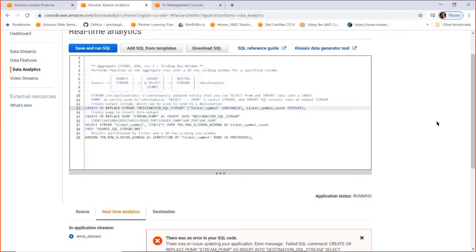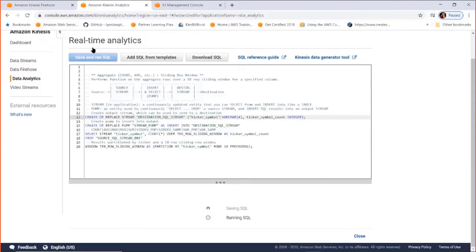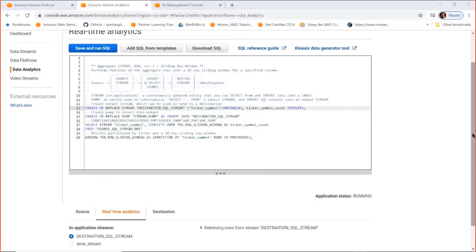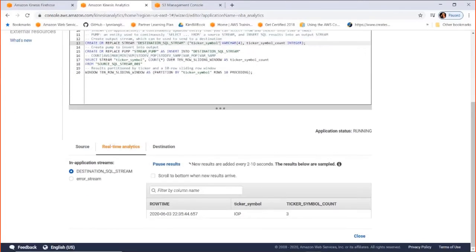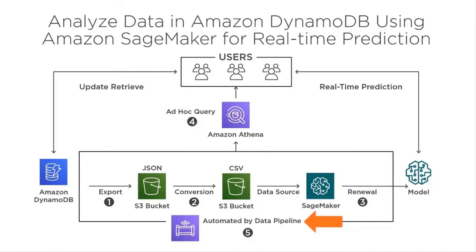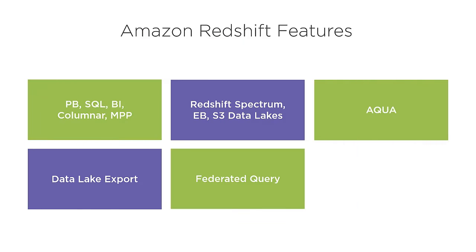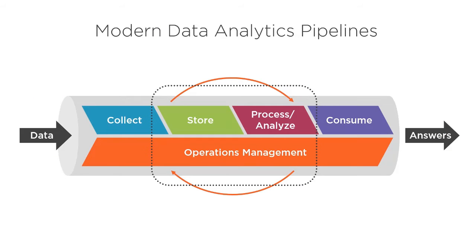Making quality data available in a reliable manner is a major determinant of success for machine learning initiatives. Data engineers are tasked with this huge responsibility, and they need to know the data and application characteristics to look for when making choices of what AWS service to use in a specific scenario. This depends on many other factors that need to be thoroughly understood.